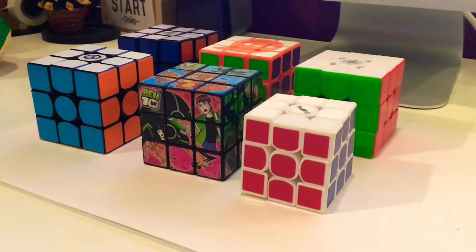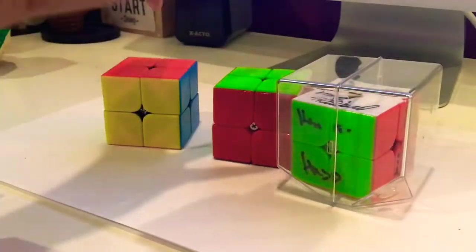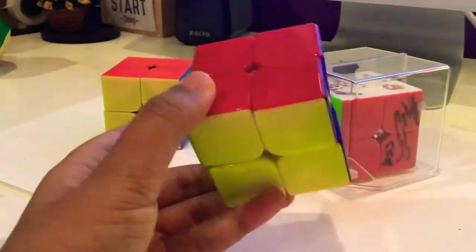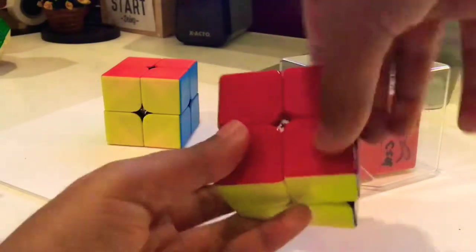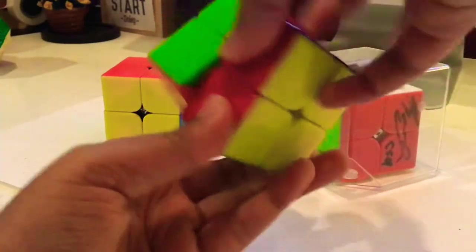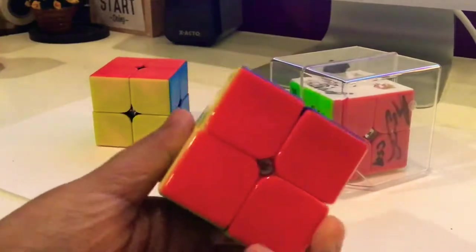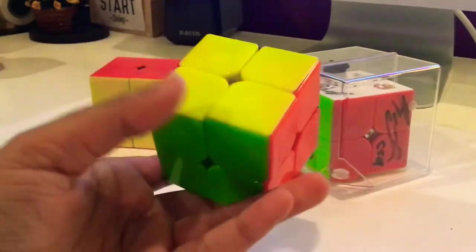Now let's move on to 2x2. I only have three cubes and I'm gonna be starting off with my least favorite one, which is the Cyclone Boys 2x2. This is actually my first 2x2 that I ordered off Amazon. The turning is extremely bad and it's really loud. But the color shades are okay. I just don't like the fluorescent oranges, but overall it's a good cube for beginners.